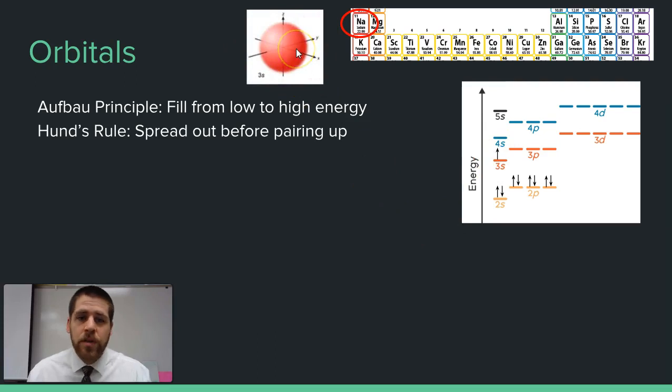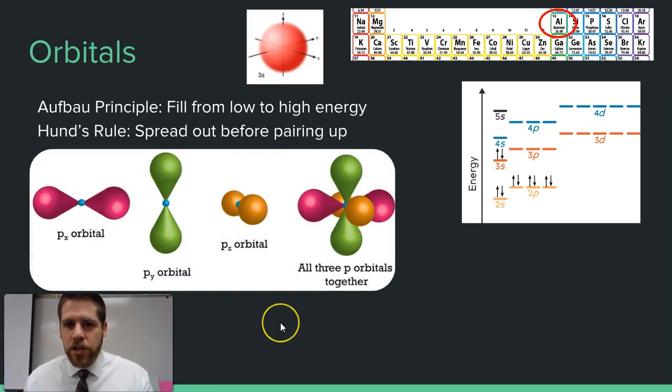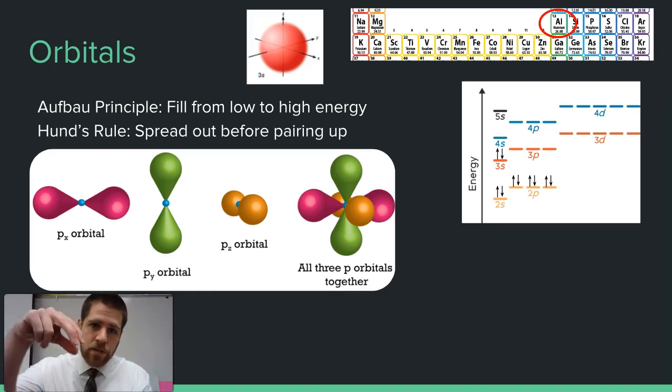The s orbitals are spherical, so we would have one electron in that region of space according to Schrodinger. If we move over to aluminum, we would fill that orbital - now we have a second electron in that spherical region of space. But then we move on to the p orbitals. The p orbitals have a different shape - this dumbbell shape. There's three orbitals, which explains why we can have up to six electrons, because each orbital holds two electrons. They're in the x-axis - think horizontally. The y-axis would be vertical.